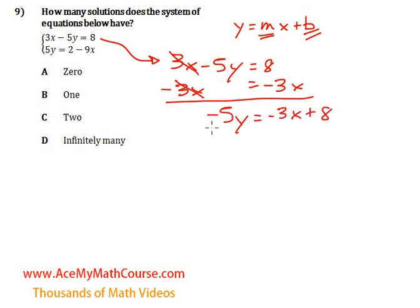Then we can divide both sides by negative 5. Those cancel out, so we get y equals negative 3 over negative 5 is just 3 over 5x. 8 divided by negative 5 is just negative 8 over 5. So we're adding a negative number, so this becomes a minus.